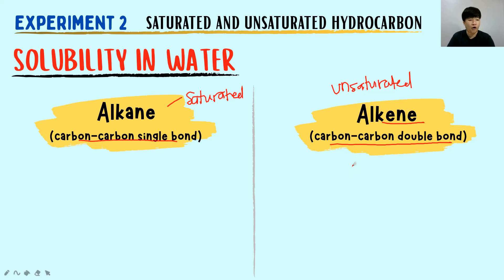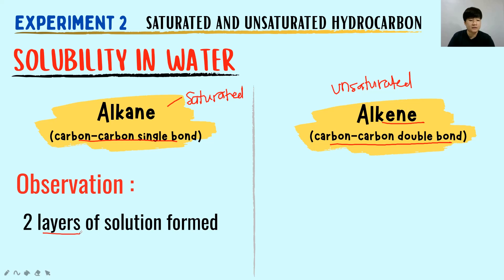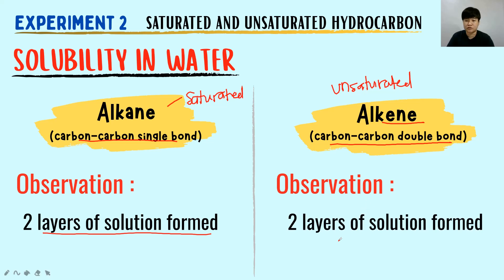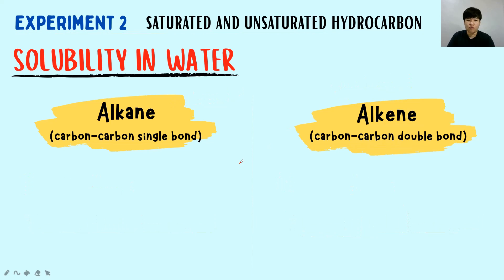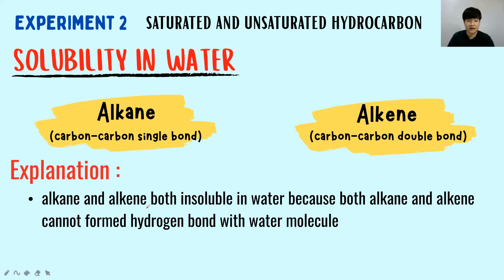The observation of alkane insolubility in water is two layers of solution formed. The observation of alkene insolubility in water also shows two layers of solution formed. Alkane and alkene are both insoluble in water because they cannot form hydrogen bonds with the water molecule.